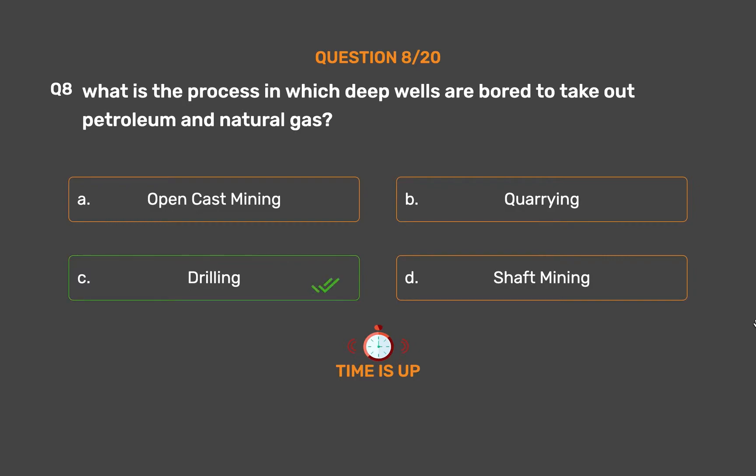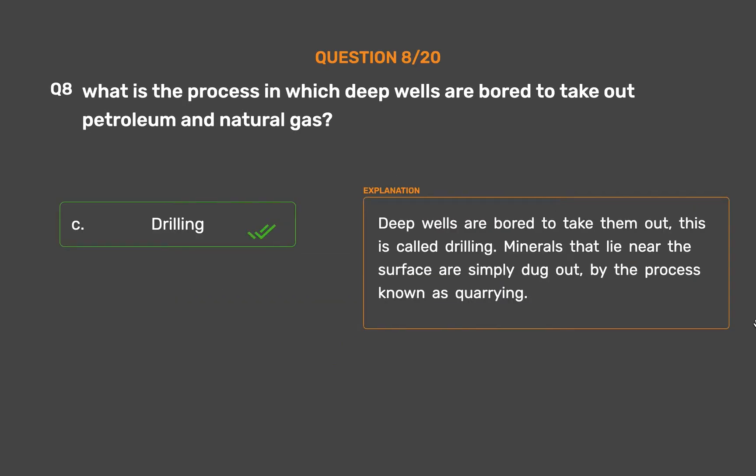The correct answer is Option C: Drilling. Deep wells are bored to take them out — this is called drilling. Minerals that lie near the surface are simply dug out by the process known as quarrying.